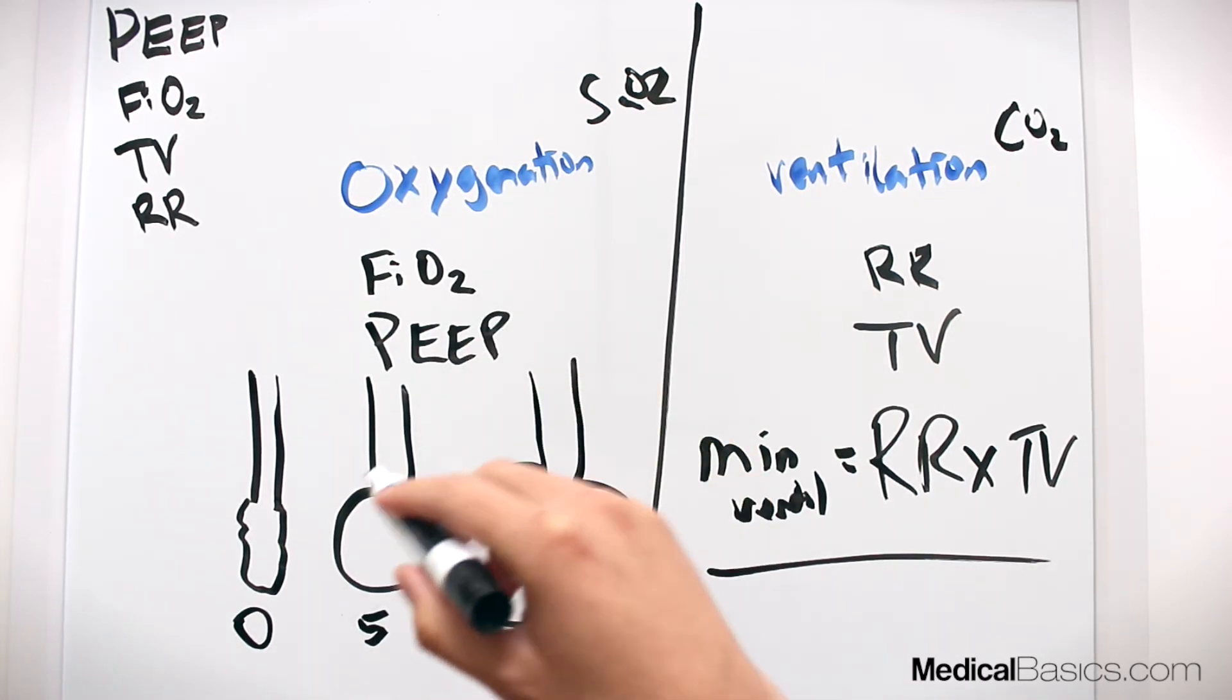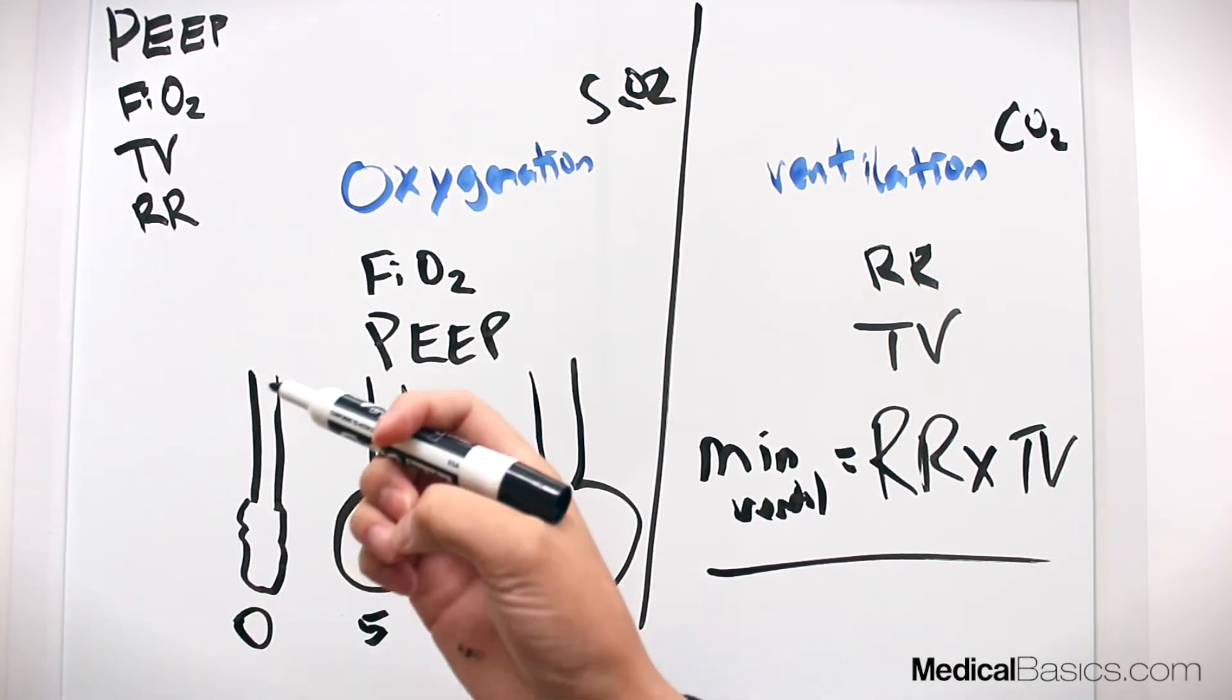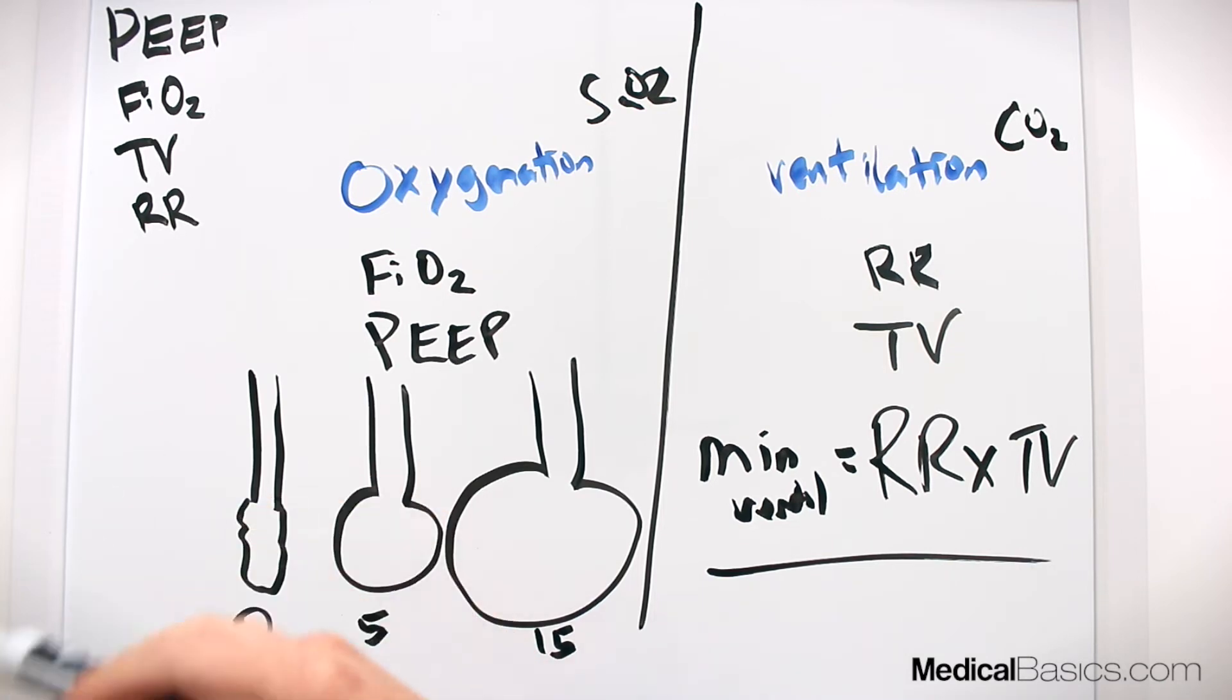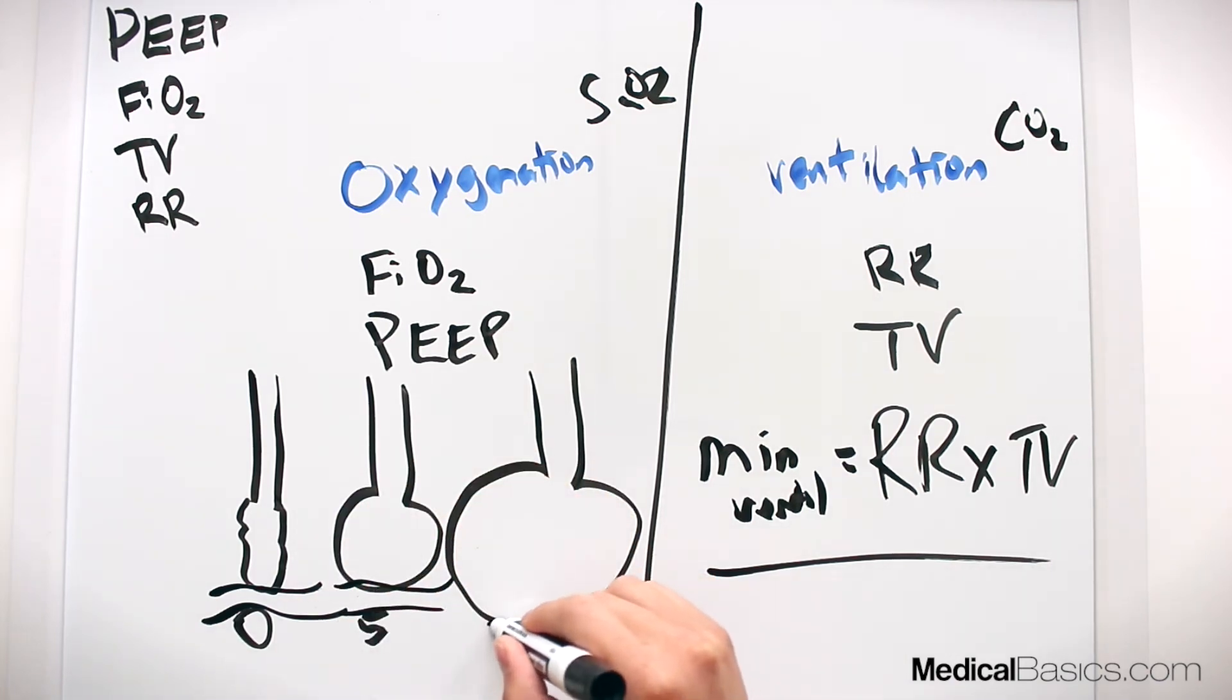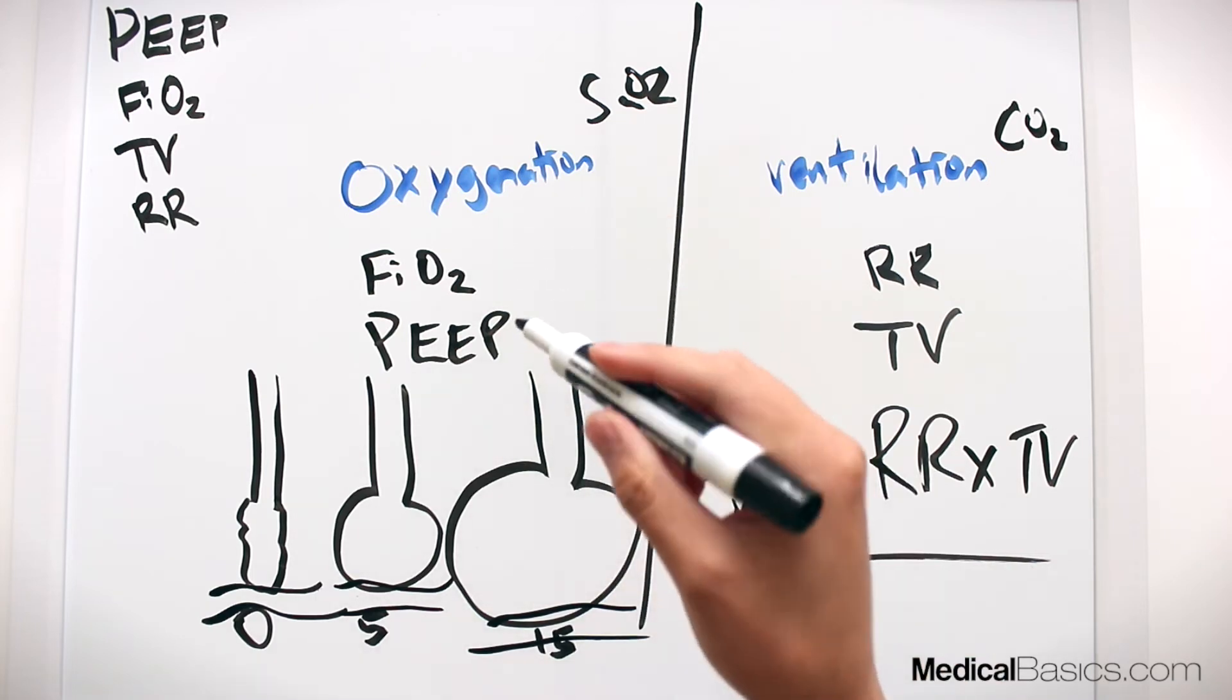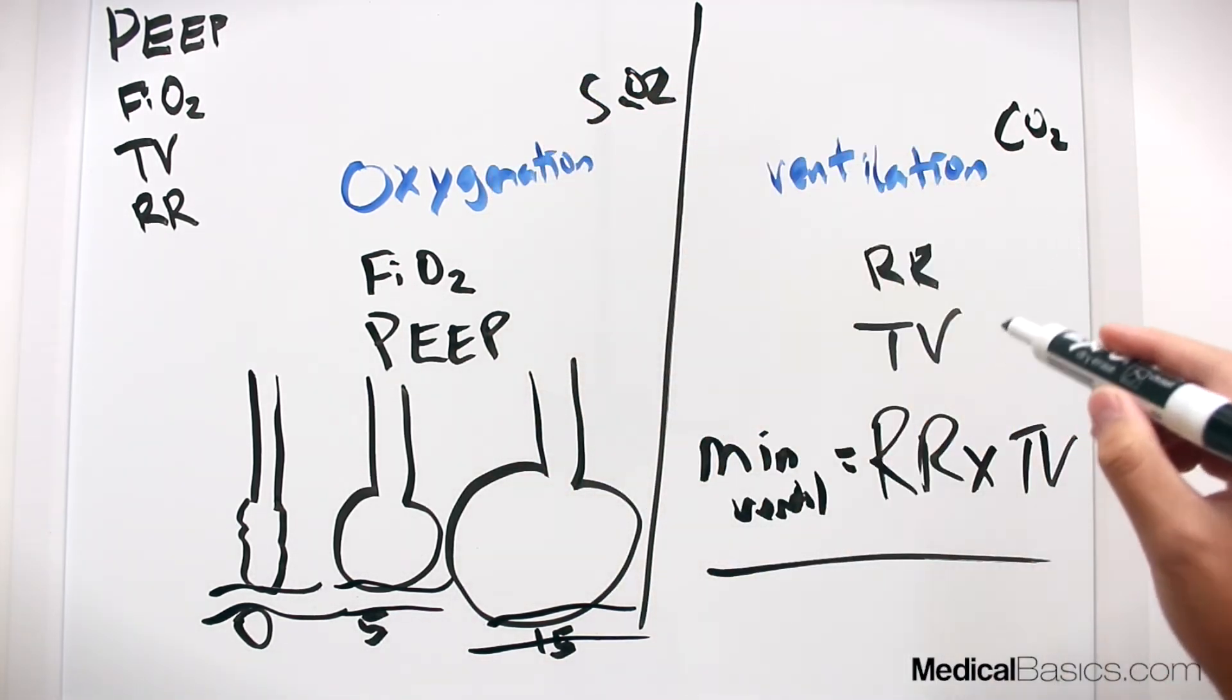So when we have alveoli that are collapsed, how would you think oxygenation would be? When we have a small alveoli that's not filled up, because remember PEEP is what keeps these alveoli pumped up - if we have zero PEEP then that means our oxygenation is going to be pretty low. The actual transport between the alveoli and the arteries is going to be pretty low. Now if we increase it we're going to have a much better oxygenation and so on and so forth. So that's how I remember which one affects oxygenation and which one affects ventilation.